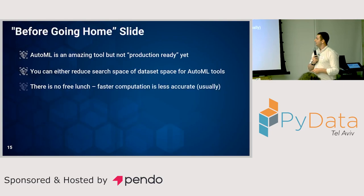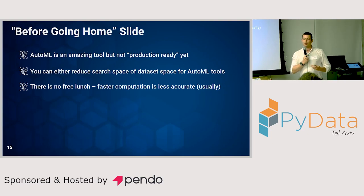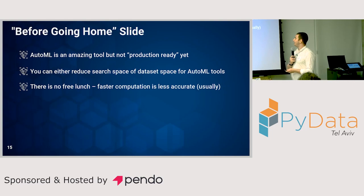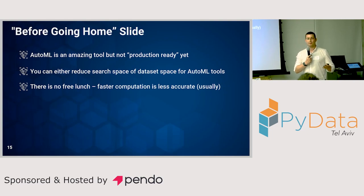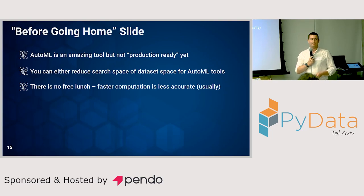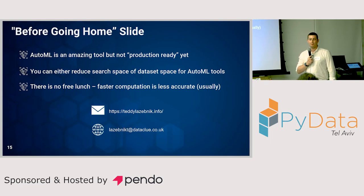Before the home slide: AutoML is an amazing tool, but it's not production-ready yet. Don't use AutoML like — I see too many clients who just say 'give me an AutoML, I'll put it in production, it'll get data and become better over time.' No — it has concept drift, it will get worse over time. Don't do it. It's not a silver bullet. It's cool as part of your development pipeline for increasing the speed of development, or for POC — that sounds great. But don't use it in production. Not yet. You can reduce either the search space or the data space for AutoML tools — both options are valid, try both. And no free lunch: faster computation results in less accuracy, at least in our experiments — not a mathematical proof.